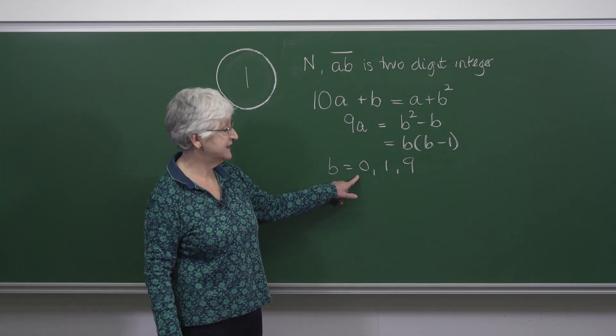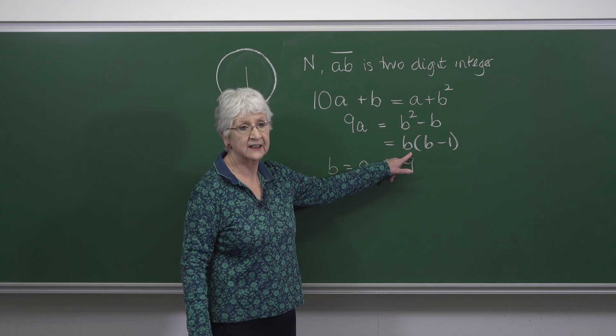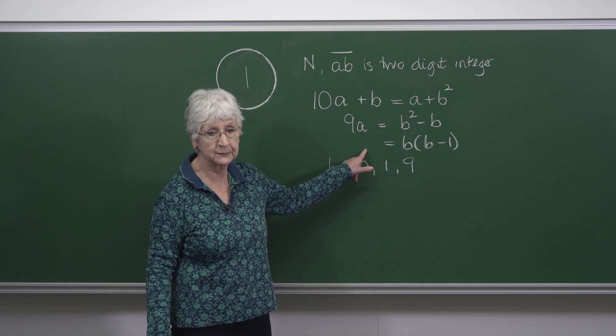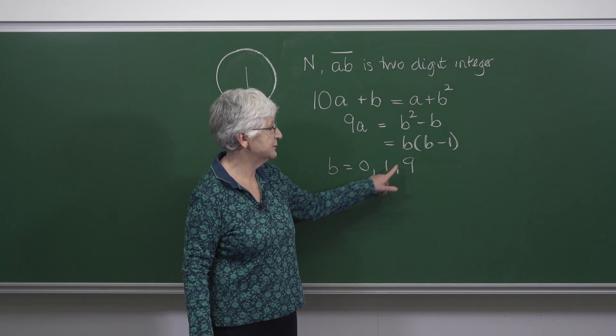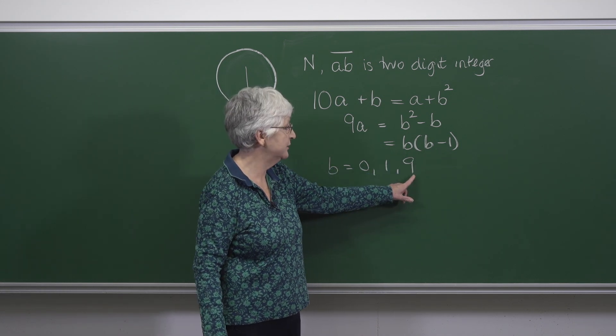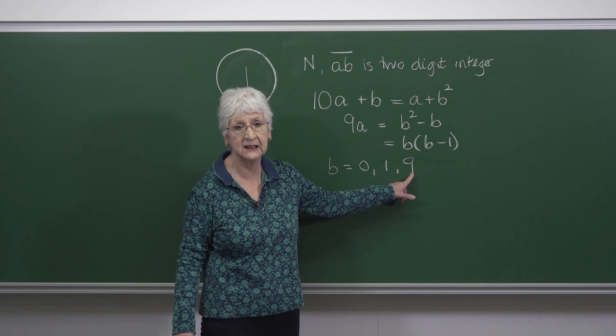B equals 0 gives me 0 on the right-hand side, which makes A equal 0, which is impossible. B equals 1 gives me 0 on the right-hand side again, and so the only possibility is B equals 9.